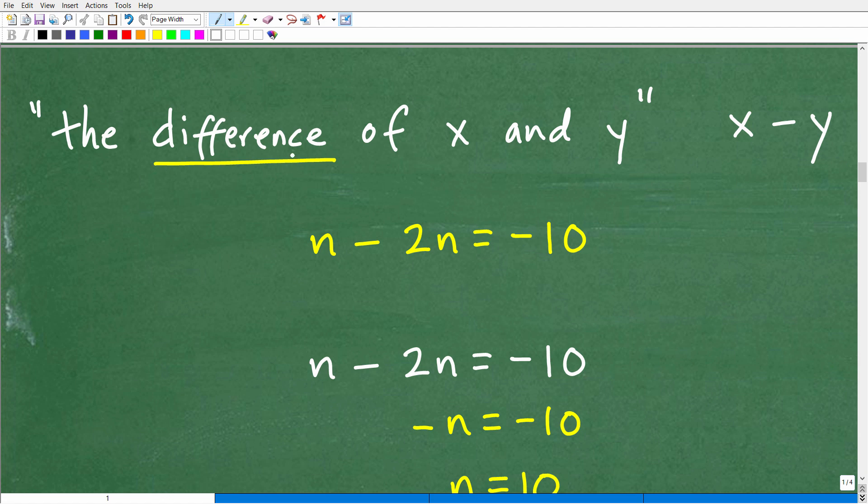The difference of x and y is x minus y. And the difference between a number and twice that number is going to be n minus 2n, right? So n minus 2n is the difference between the number and twice that number. So order makes a difference. It's not 2n minus n. It's n minus 2n. And the difference between the number and twice the number is negative 10. So this is our basic equation. So let's go ahead and solve this now.